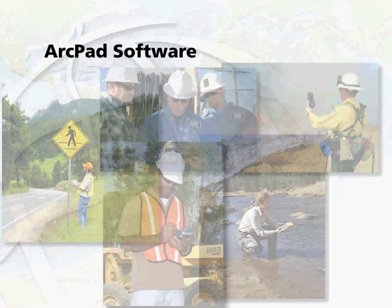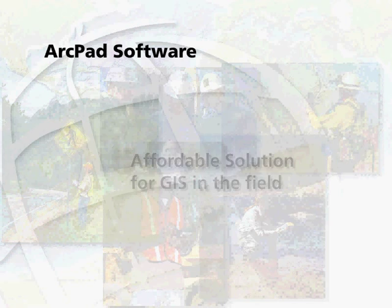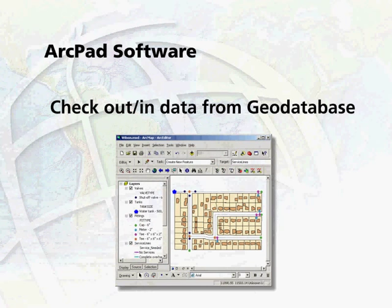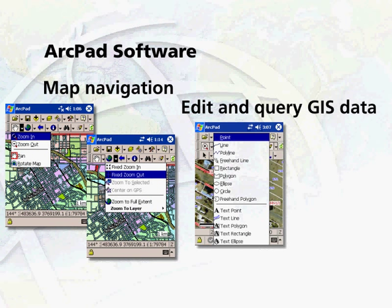ArcPad mobile GIS software is an affordable solution to work with GIS data directly in the field, without the need for paper maps. Your team can check data out and in from a geodatabase, as well as perform traditional GIS functions, such as map navigation, editing,